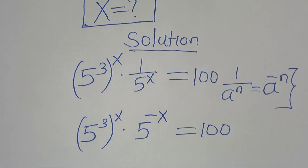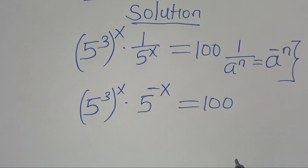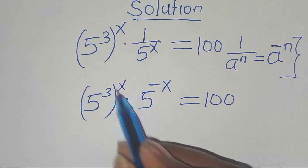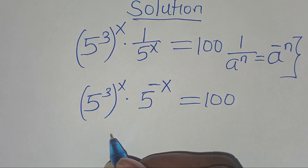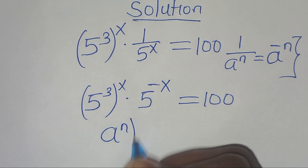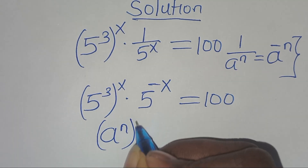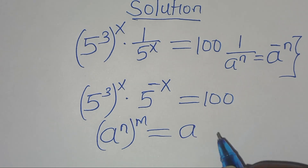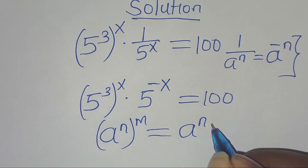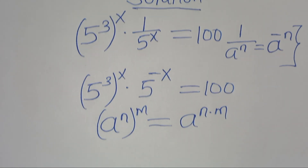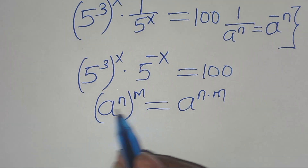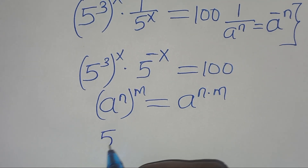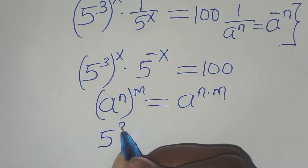The next step: 5 to the power of 3 to the power of x is in the form of a to the power of n, all raised to the power of m, which we can express as a to the power of n times m. Applying this exponent property, we have 5 to the power of 3x.